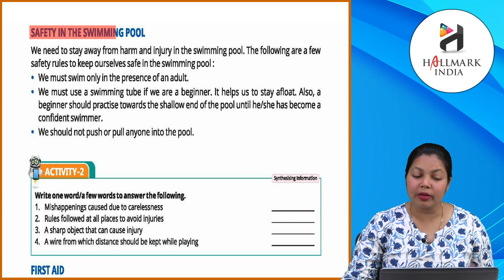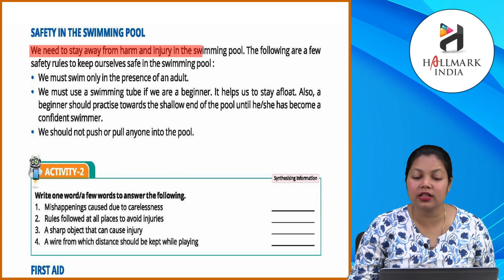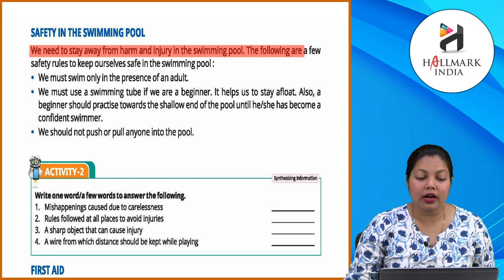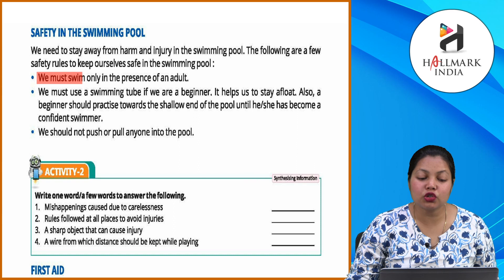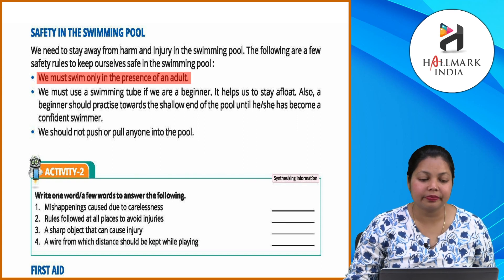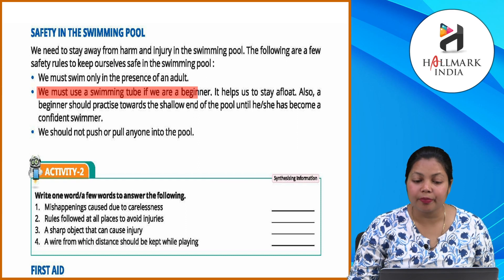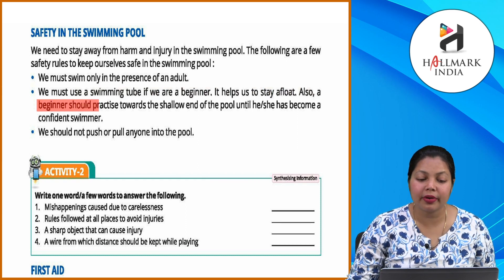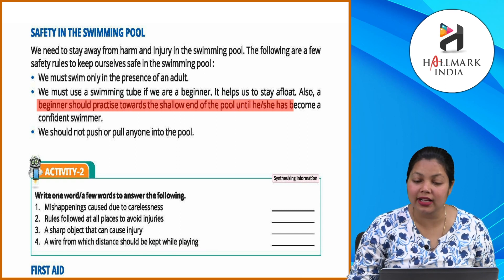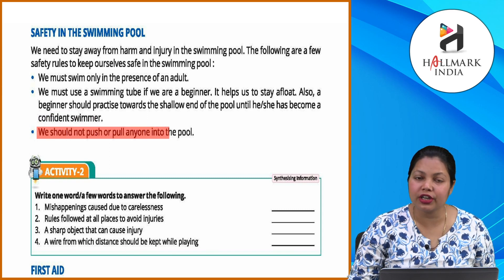Safety in the swimming pool: We need to stay away from harm and injury in the swimming pool. We must swim only in the presence of an adult. We must use a swimming tube if we are a beginner — it helps us to stay afloat. A beginner should practice towards the shallow end of the pool until he or she has become a confident swimmer. We should not push or pull anyone into the pool.